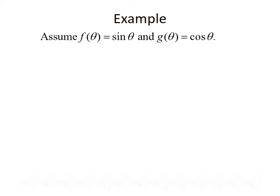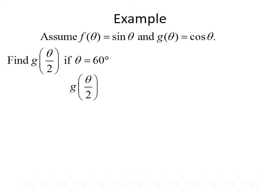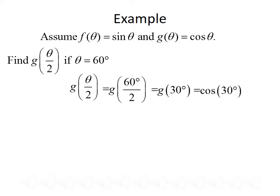Let's look at an example. Assume that f of theta equals sine of theta and g of theta equals cosine of theta. First, we want to find g of theta over 2 if theta equals 60 degrees. Plugging in 60 degrees for theta gives us g of 60 degrees over 2. Since 60 divided by 2 gives us 30 degrees, we have g of 30 degrees, which equals cosine of 30 degrees. From the chart, the cosine of 30 degrees is the square root of 3 over 2.